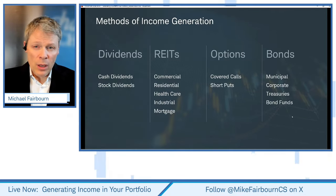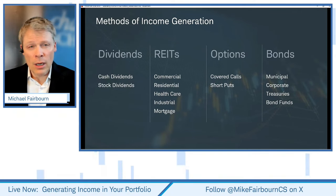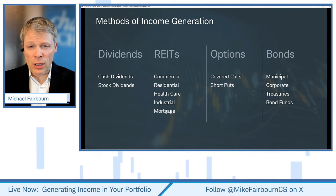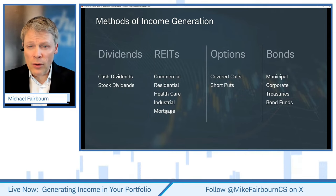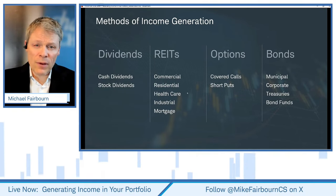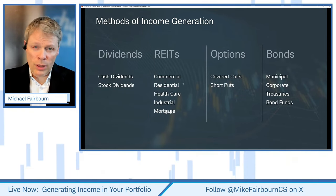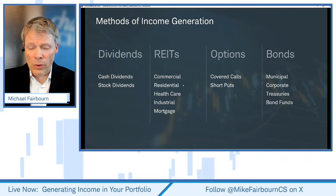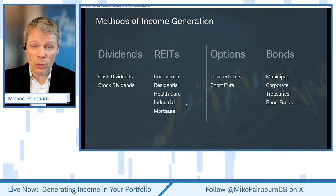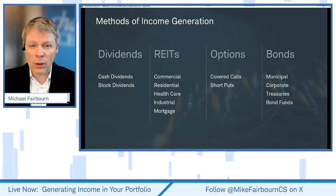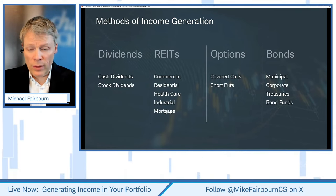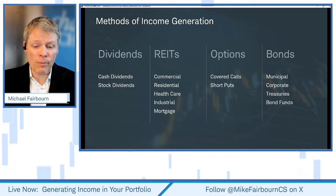Just a quick point. The methods of income generation are listed right there. Under REITs there are a few different categories: commercial, residential, healthcare, industrial, and mortgage. I look forward to going through those with you in just a moment.